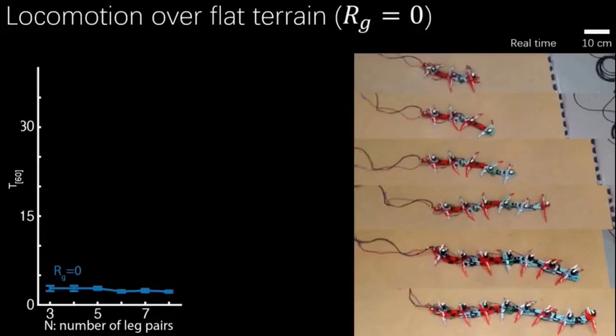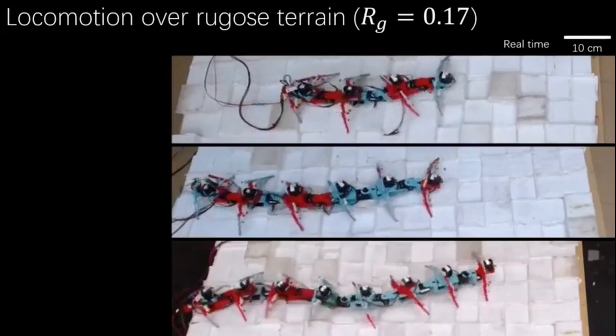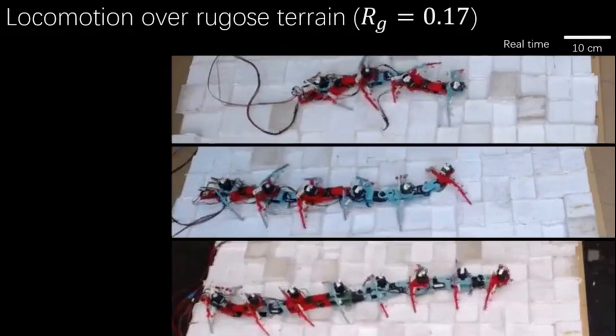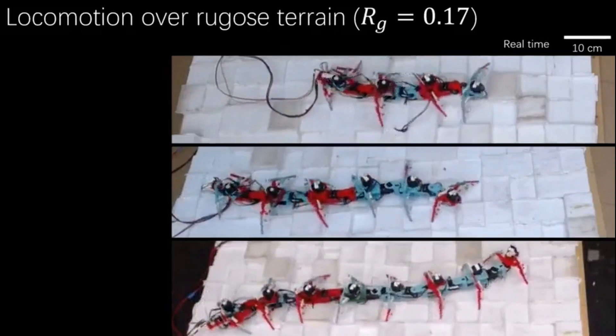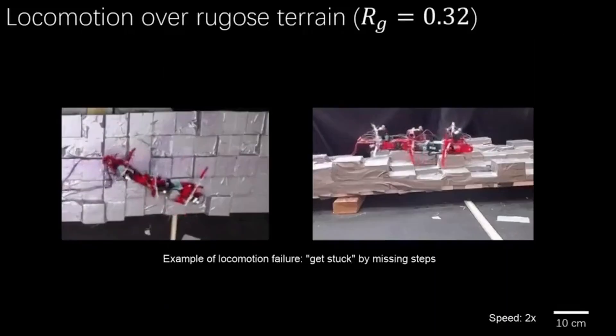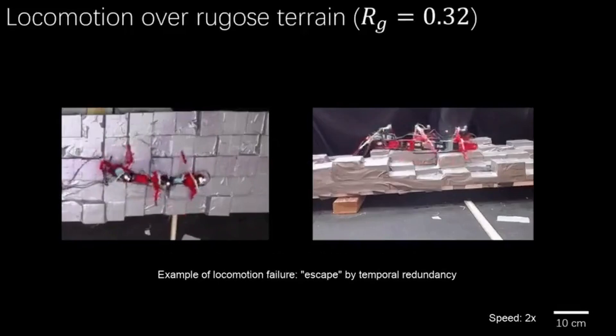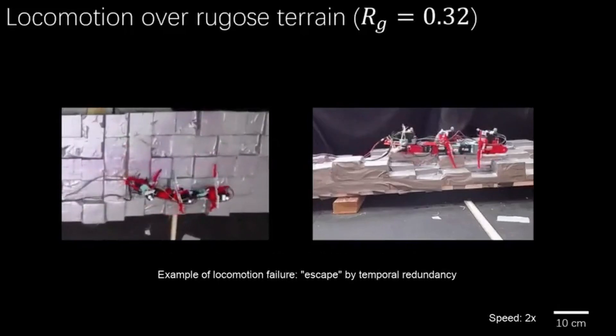He then tested the robot by increasing its number of legs by two each time, starting with six and eventually expanding to 16. As the leg count increased, the robot could more agilely move across the terrain, even without sensors, as the theory predicted.